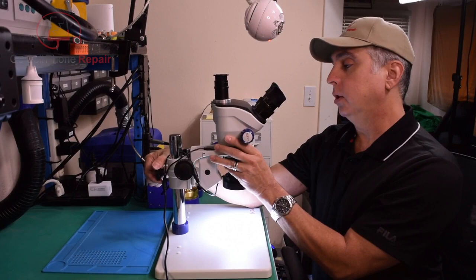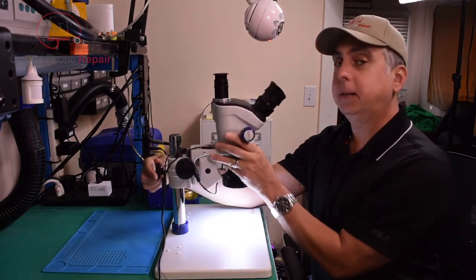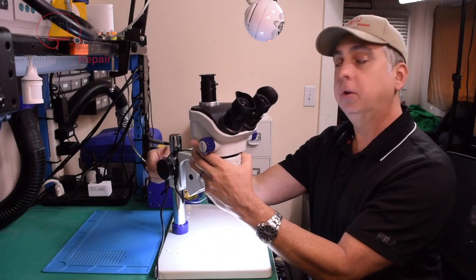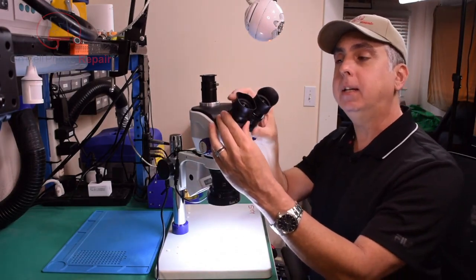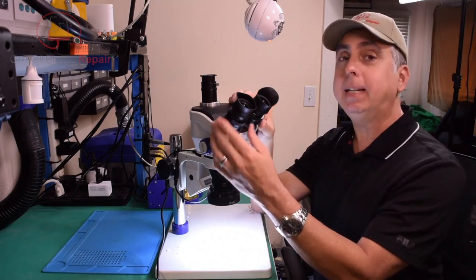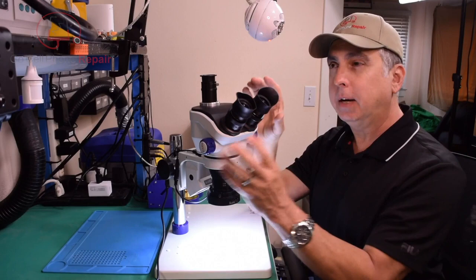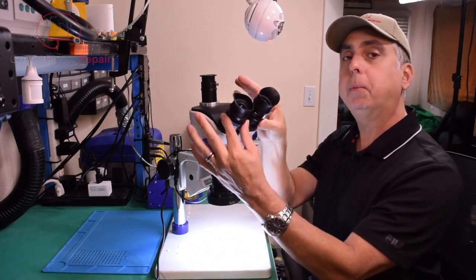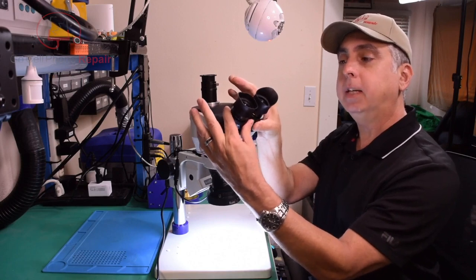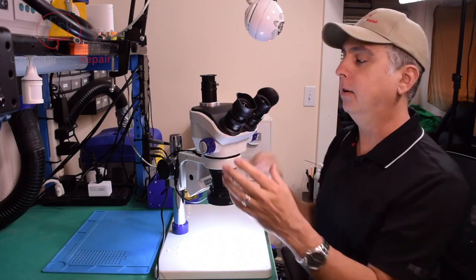Over here on the back you can just loosen up this little clamp and that will allow you to rotate the microscope around. While I have it turned over, you can also adjust the distance between these two eyepieces. The IPD or interpupillary distance for everyone is going to be a little bit different. All you have to do is pull these apart or push them together, and you want to make sure you have that lined up with each pupil otherwise you're going to see big black circles around the outside and that makes it hard to focus.